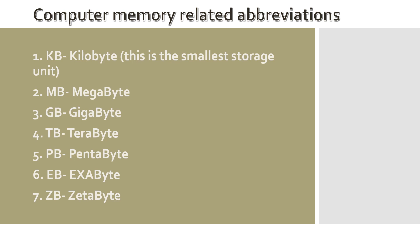Now we are talking about Computer Memory Related Abbreviations. KB means Kilobyte, which is the smallest storage unit. MB is Megabyte. GB is Gigabyte. TB is Terabyte. PB is Petabyte. EB is Exabyte. And ZB is Zettabyte. It is very important for you to learn these expansions along with their terminologies and short forms, because sometimes acronyms look similar but their expansions are different.